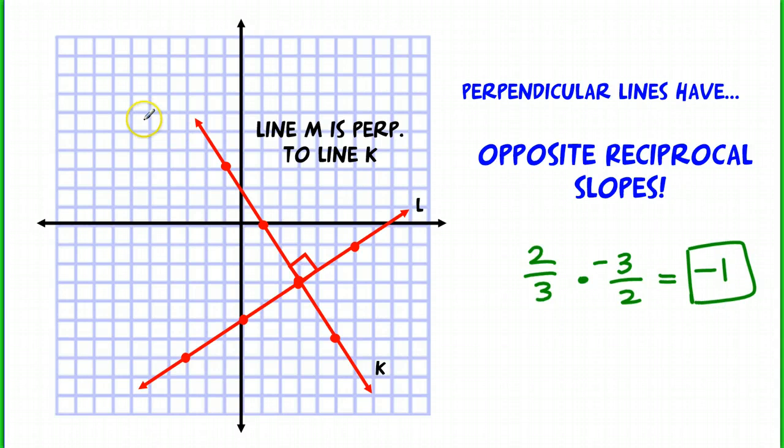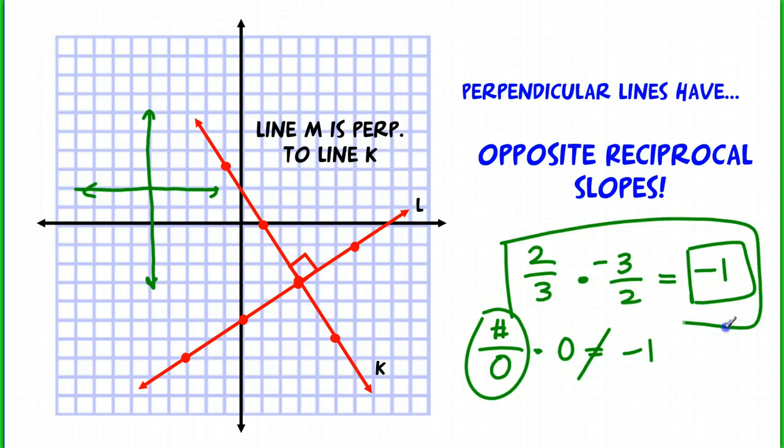Now the only case where that's not true is with a horizontal and a vertical line, because these are guaranteed to be perpendicular, but you can't multiply zero times an undefined number. The slope of a vertical line is undefined. So like, let's say it was a number over zero, and the slope of a horizontal line is zero. This does not equal negative one. So in all other cases, though, this is true.